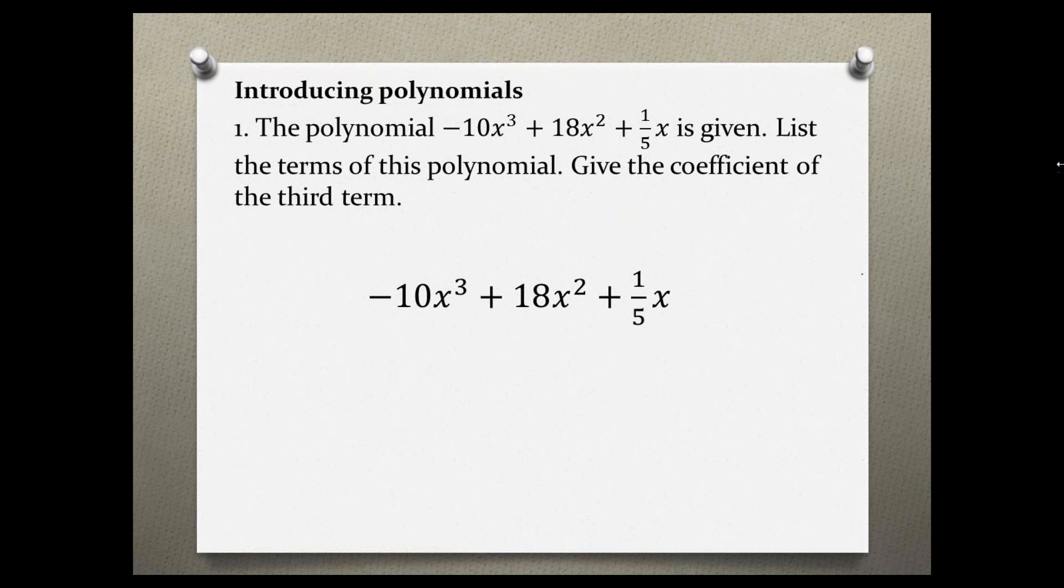Here we have our polynomial and we are asked to list the terms. First of all, a term is the product of a coefficient and a variable or variables.